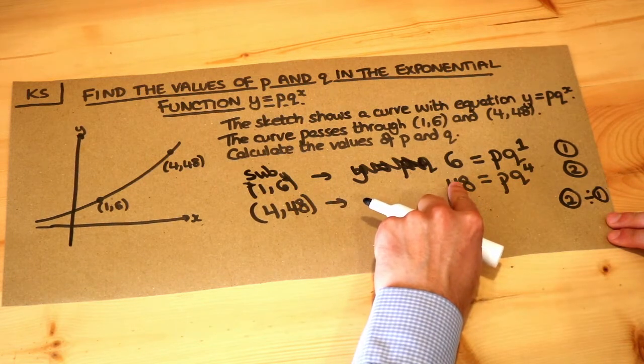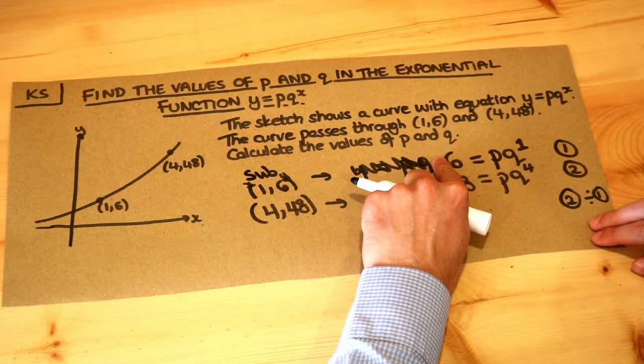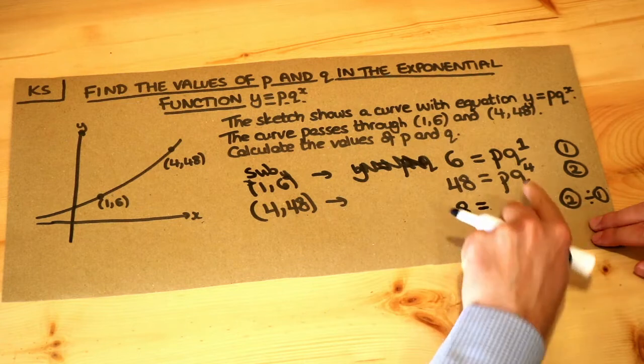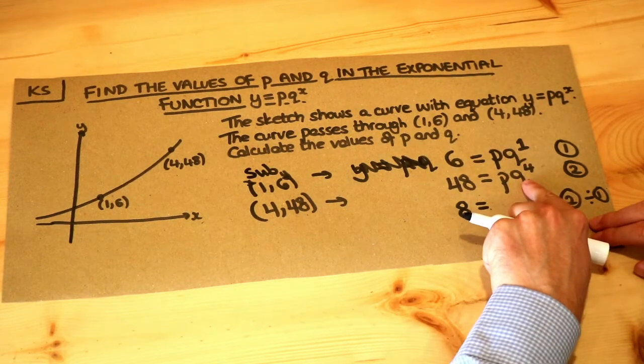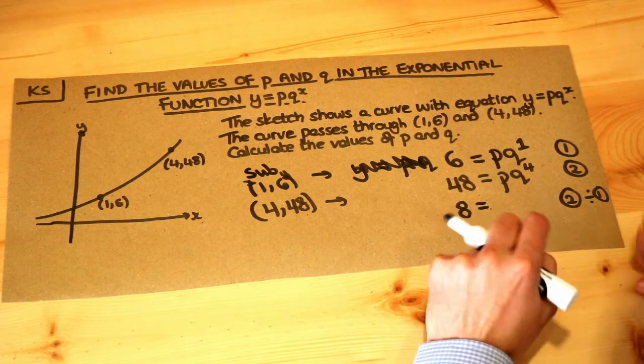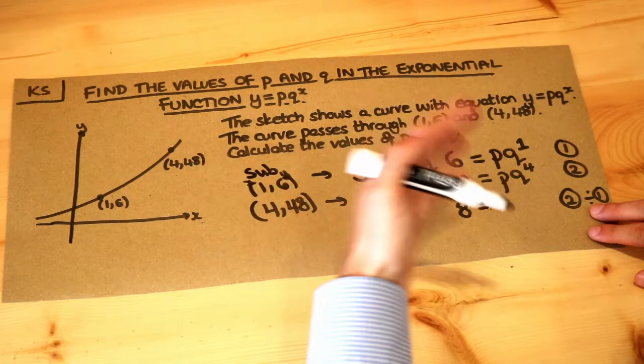So if we do the left-hand side in the second equation divided by the left-hand side in the first equation, 48 divided by 6 equals 8. And then if we divide the right-hand side, pq^4 divided by pq^1. Now a mistake that students often make is they forget the p's cancel. If you do p divided by p, that's just 1. It effectively disappears.